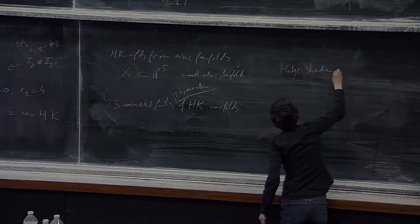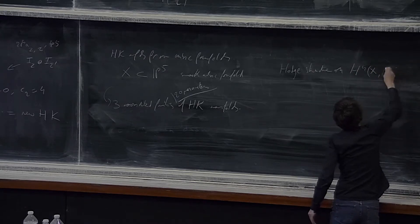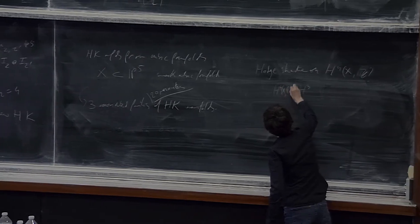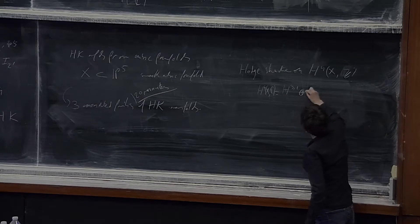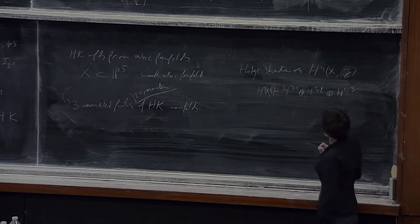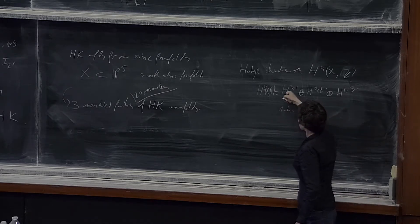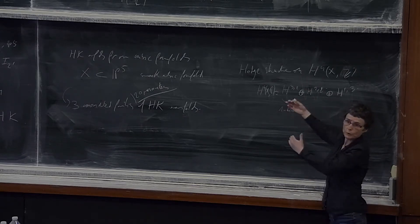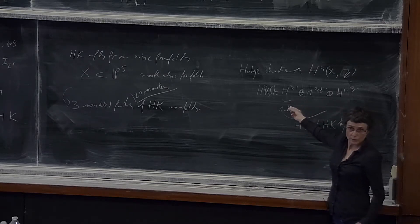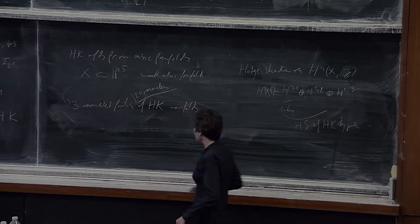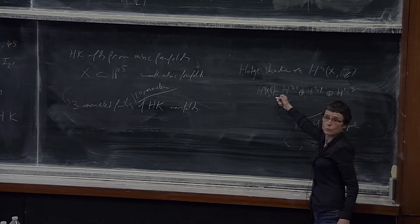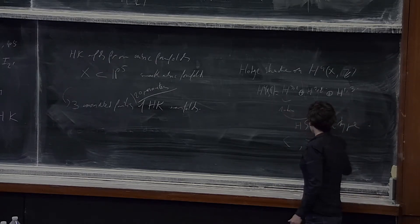The link between cubic fourfolds and hyperkähler geometry is via Hodge theory. You consider the Hodge structure on H^4(X) with integral coefficients: the Hodge decomposition on H^4(X, C) takes the form H^{3,1} plus H^{2,2}. There is no H^{4,0} because it is Fano. The key point is that H^{3,1} is one-dimensional. And what you get, up to a shift of bi-degree (1,1), is a Hodge structure of hyperkähler type, which is a variation of Hodge structure polarized by the intersection form — the analog of Q — together with a polarization class H^2.